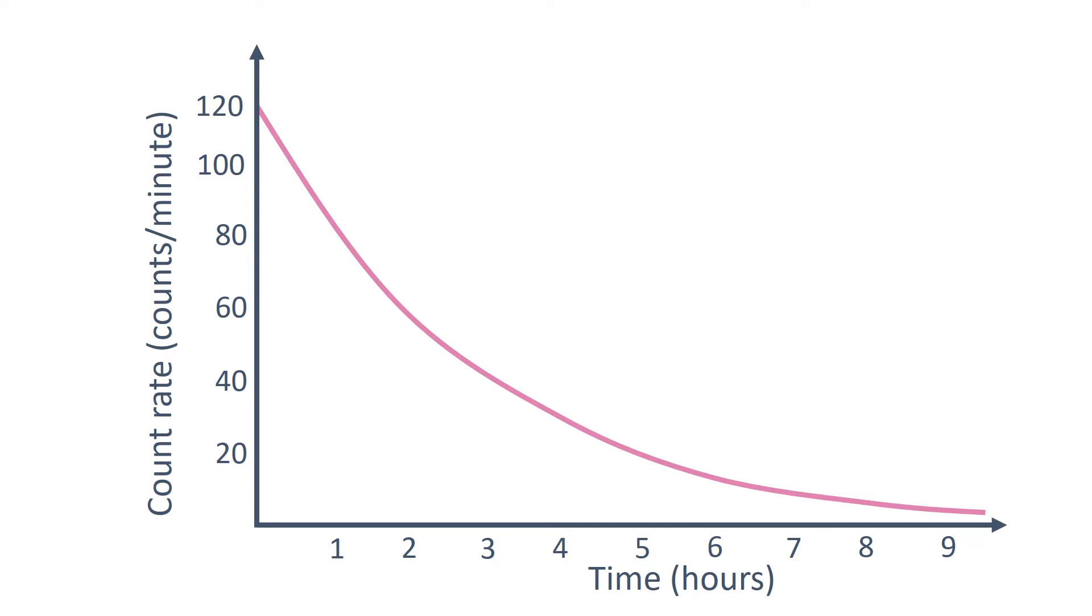In this graph you can see that the initial count rate was 120, and the time it took to drop to half of that, which is 60, was two hours. This is known as the half-life.